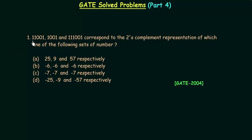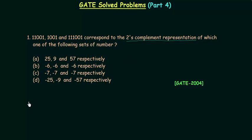Three binary numbers 11001, 10001, and 111001 correspond to the 2's complement representation of which one of the following sets of numbers? We have 2's complement representations for three decimal numbers and we have to find those decimal numbers. Let's see how we can solve it.